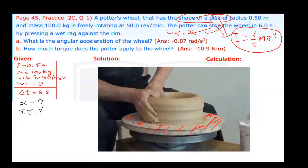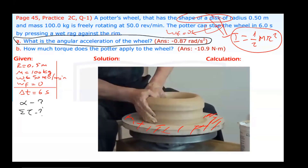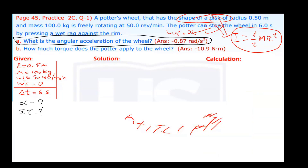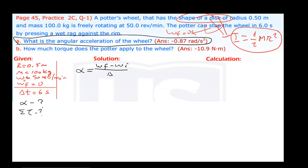The first part, Part A, is just about the kinematic equations we studied in Chapter 1, Section 1. We are going to calculate the angular acceleration by the definition of angular acceleration. Alpha is equal to final angular speed minus initial angular speed, divided by delta T. Final angular speed is zero. Initial is given as 50 revolutions per minute. Delta T is given in seconds, so I need to change revolutions per minute to radians per second.